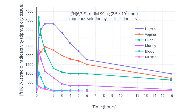Radioactivity was first discovered by Henri Becquerel in 1896, when he observed that uranium emitted rays that could penetrate through opaque materials. Later, Marie and Pierre Curie discovered two new radioactive elements, polonium and radium, and coined the term radioactivity to describe the phenomenon.